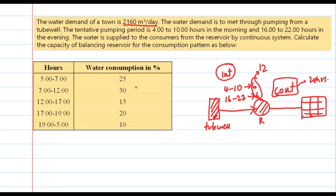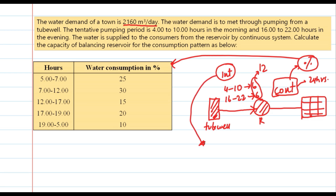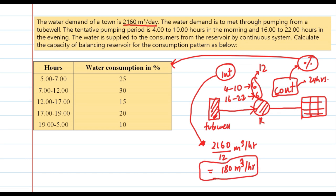Now we need to calculate the capacity of the balancing reservoir. The water consumption pattern for this continuous system is based on water consumption percentages. To calculate the discharge or demand in m³ per hour, it will be 2160 divided by 12, since there are only 12 hours of pumping. So 2160 divided by 12 equals 180 m³ per hour. We divide by the pumping period. So in this intermittent system, the supply is 180 m³ per hour.